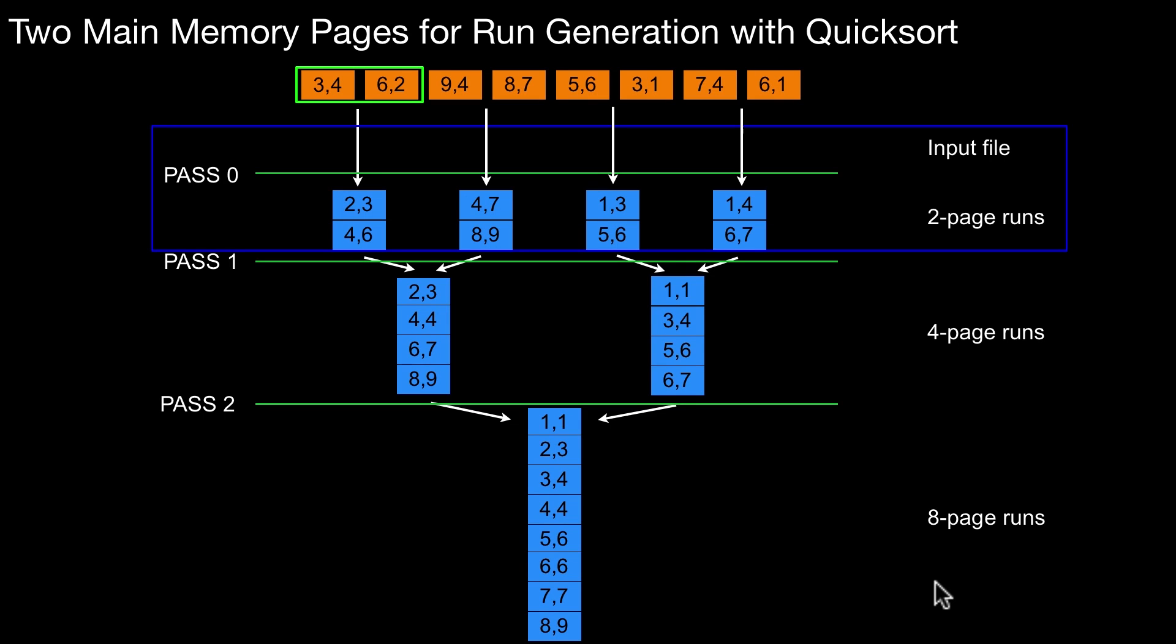In my video on external merge sort, I explained the simplest variant of the algorithm. I explained how the merge phases work. I explained how run generation works using quicksort.